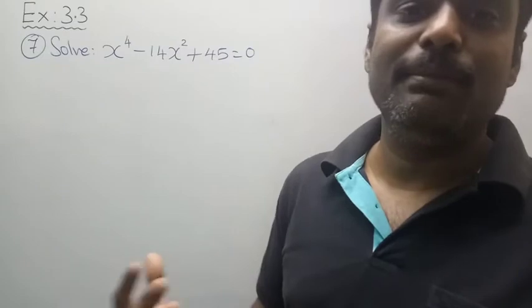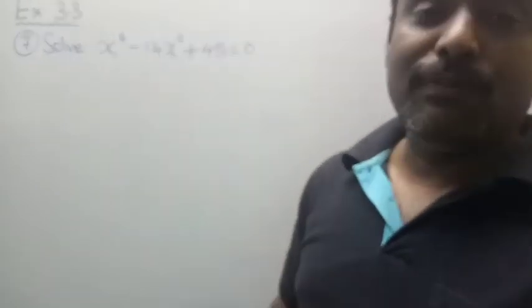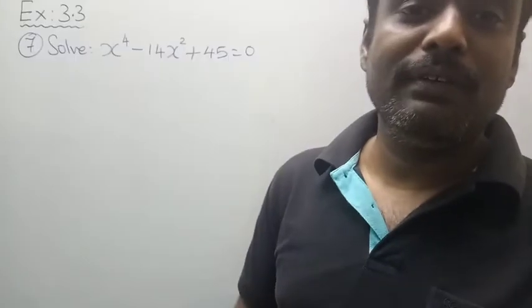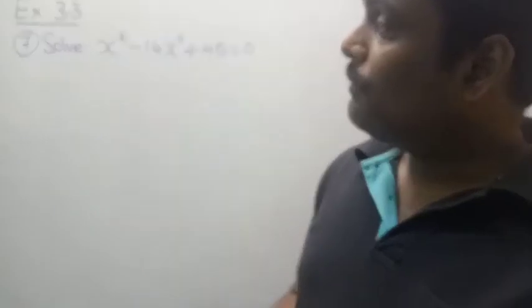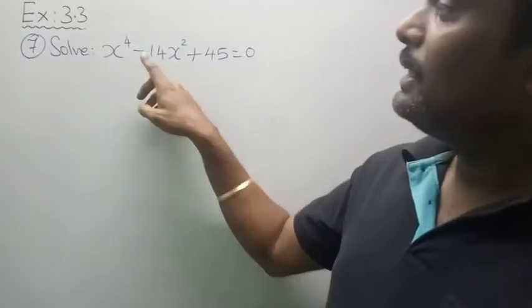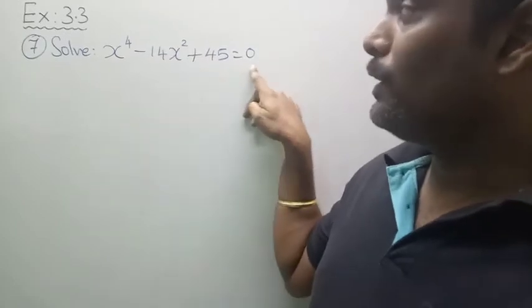In this case, degree 4, obviously I wanted to verify whether x - 1 and x + 1 and 2, -2, but when you see specially in this case the question is x⁴ - 14x² + 45 = 0.